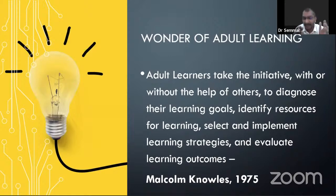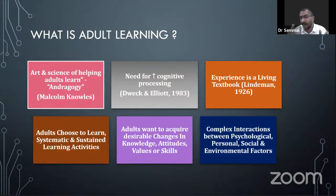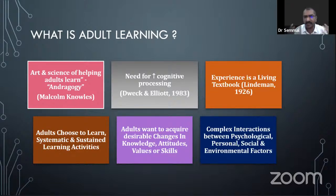Malcolm Knowles refined the definition further in 1975. He described adult learning — andragogy — as the art and science of helping adults learn. In college we used pedagogy; this is andragogy. Adults need increased cognitive processing. If someone says 'just take this road to Riyadh,' an adult will not blindly accept it — they want the map, the sequence of cities, and the direction.